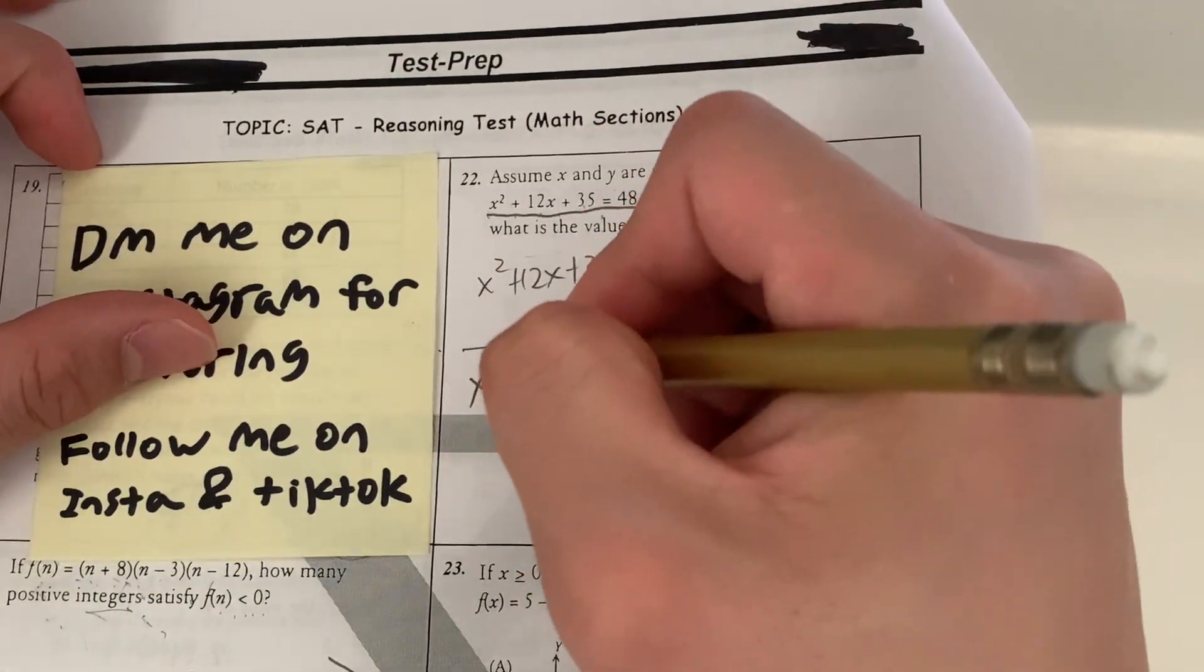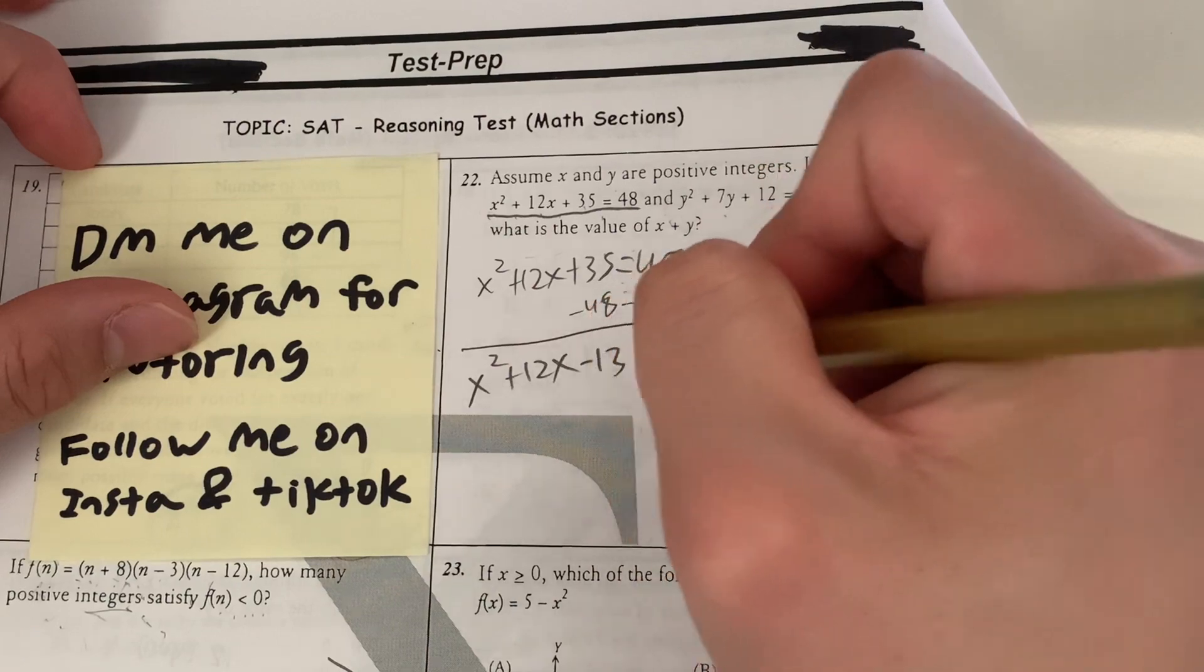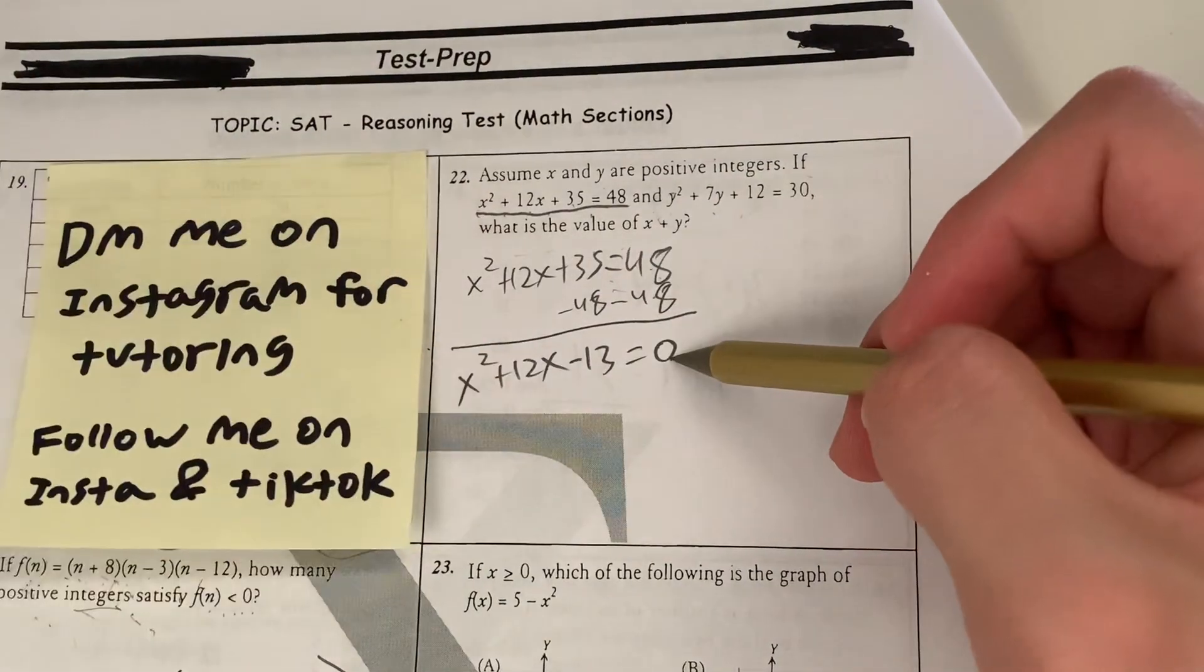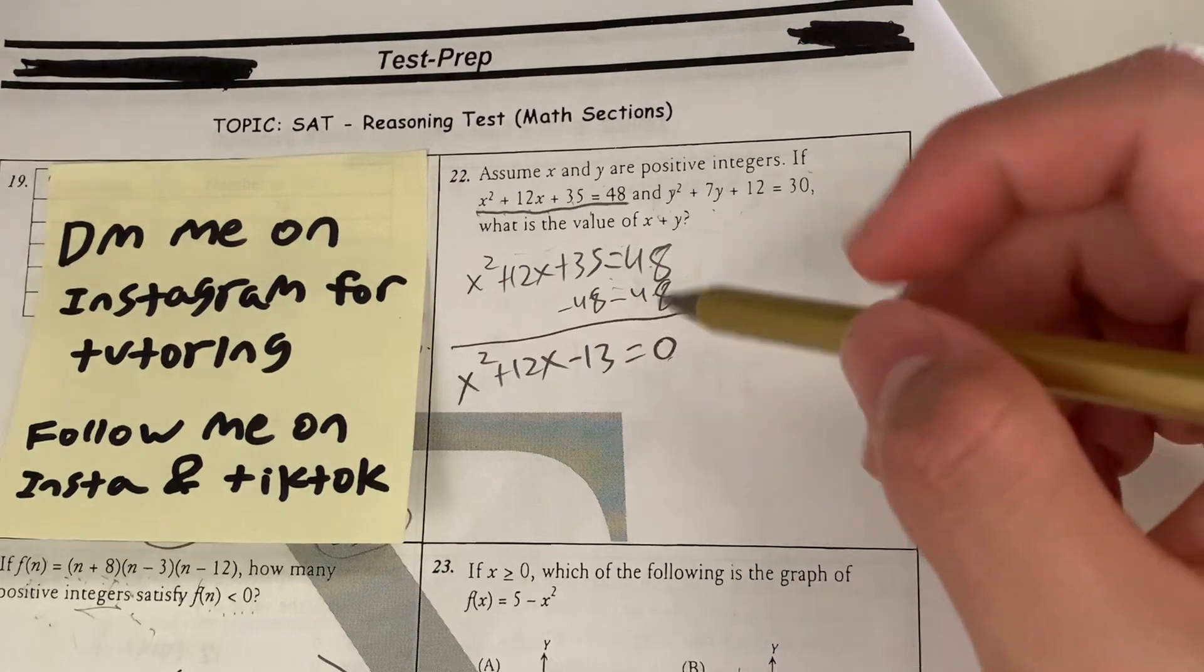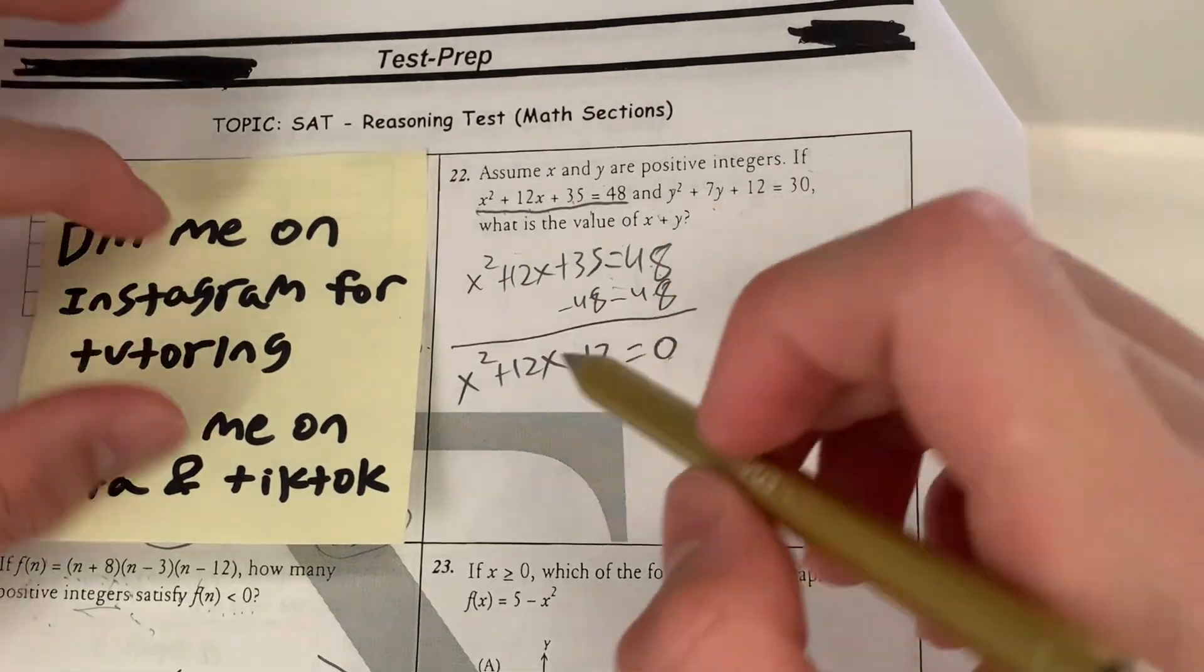Now doing so, I get x² + 12x. What's 35 minus 48? That's going to be negative 13 equals zero. So looking familiar, we have a quadratic right here. And how do we solve? There's two ways. Either you can use the quadratic formula, or you can do factoring, which in this case is possible.